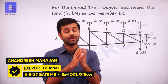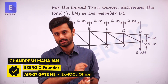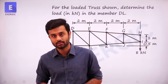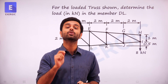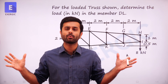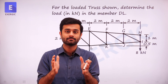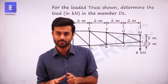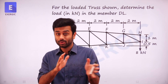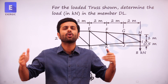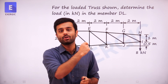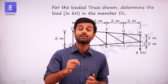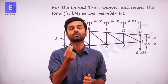We have been told that whenever we solve a question on trusses, you have to pick one method — either method of joint or method of section. But there are certain numericals where you will have to use both methods together if you want to solve the question in exam time. Let's have a look at such a question where we combine both method of joint and method of section to get to the solution.